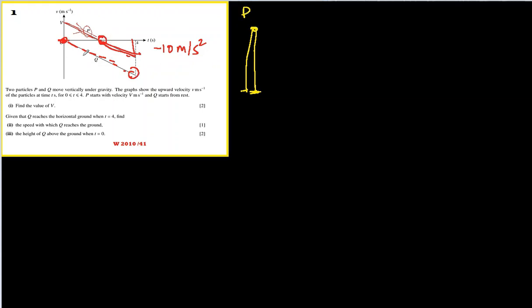This is particle P. What about Q? It is dropped from a height and it just fell down on the ground. That's the only explanation. Let me undo everything and let you know how to answer the questions.